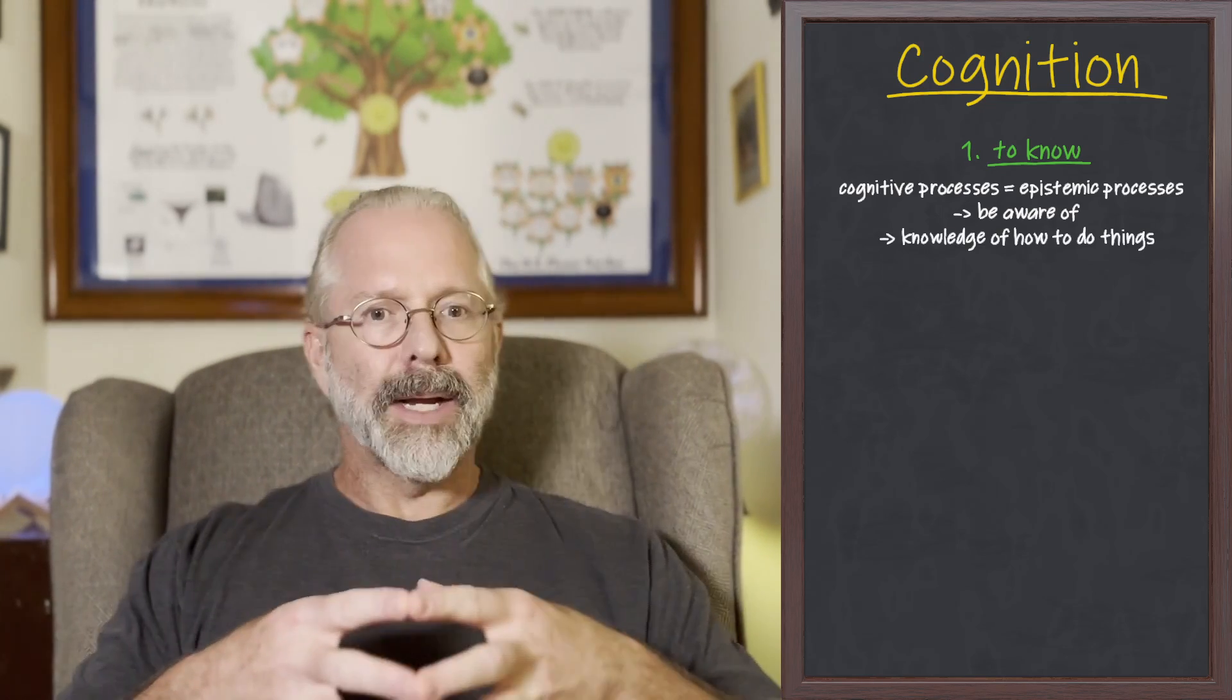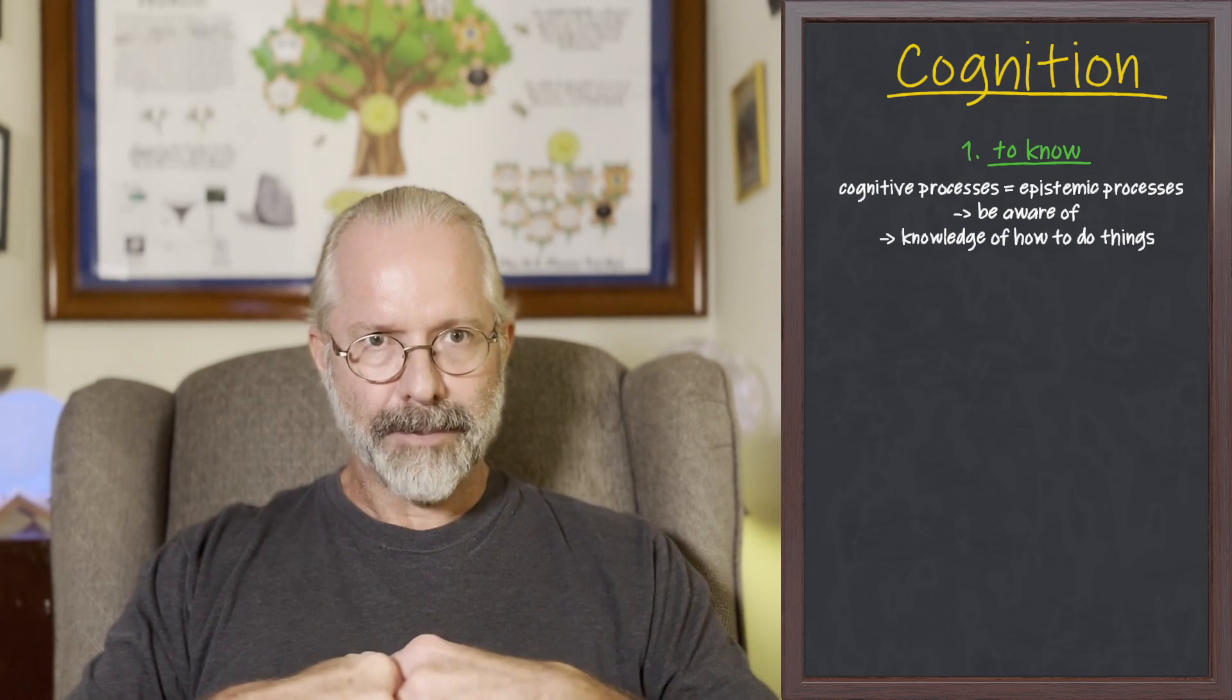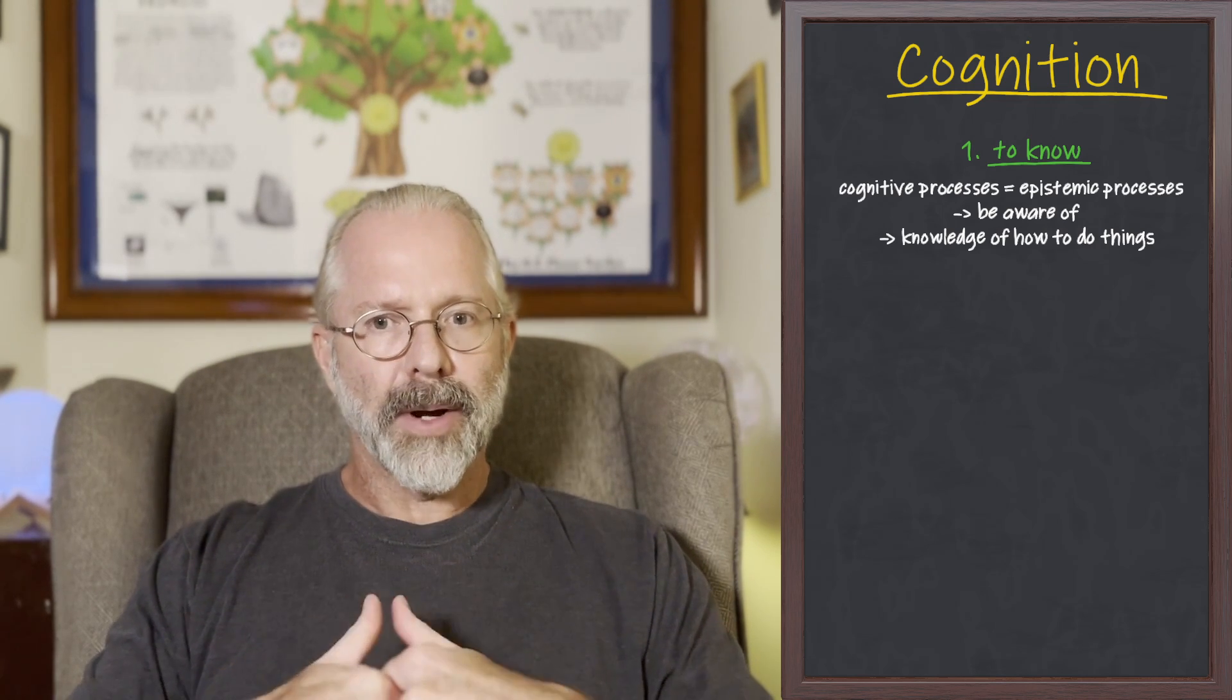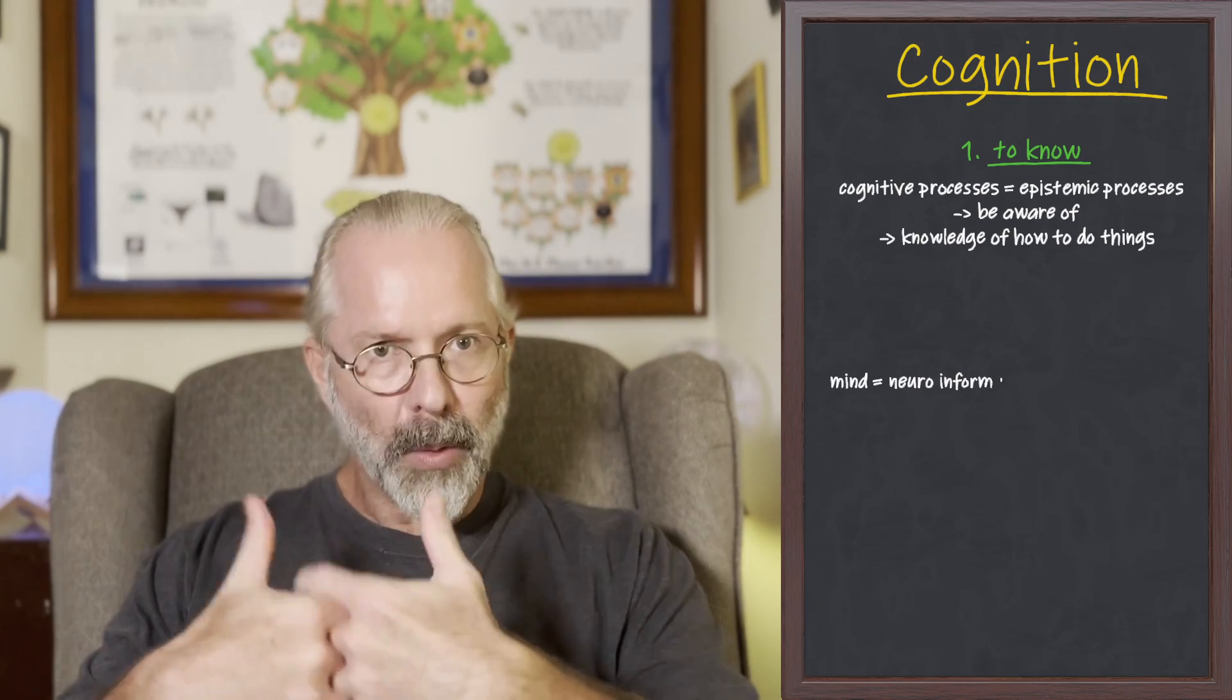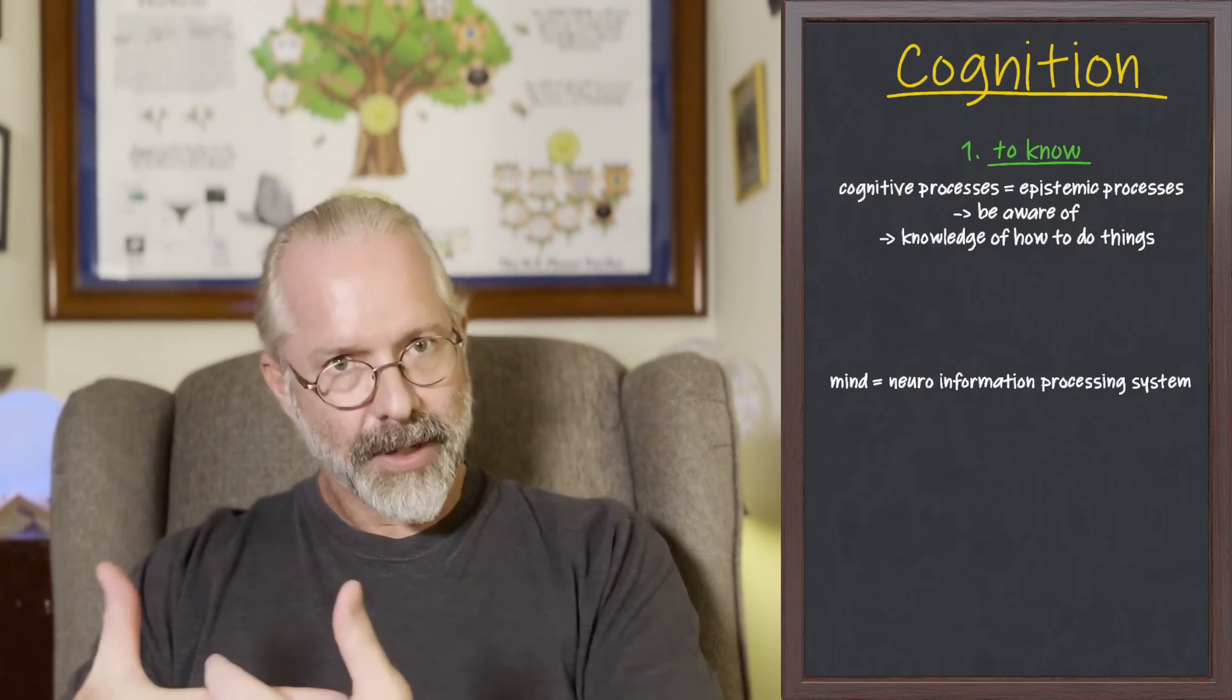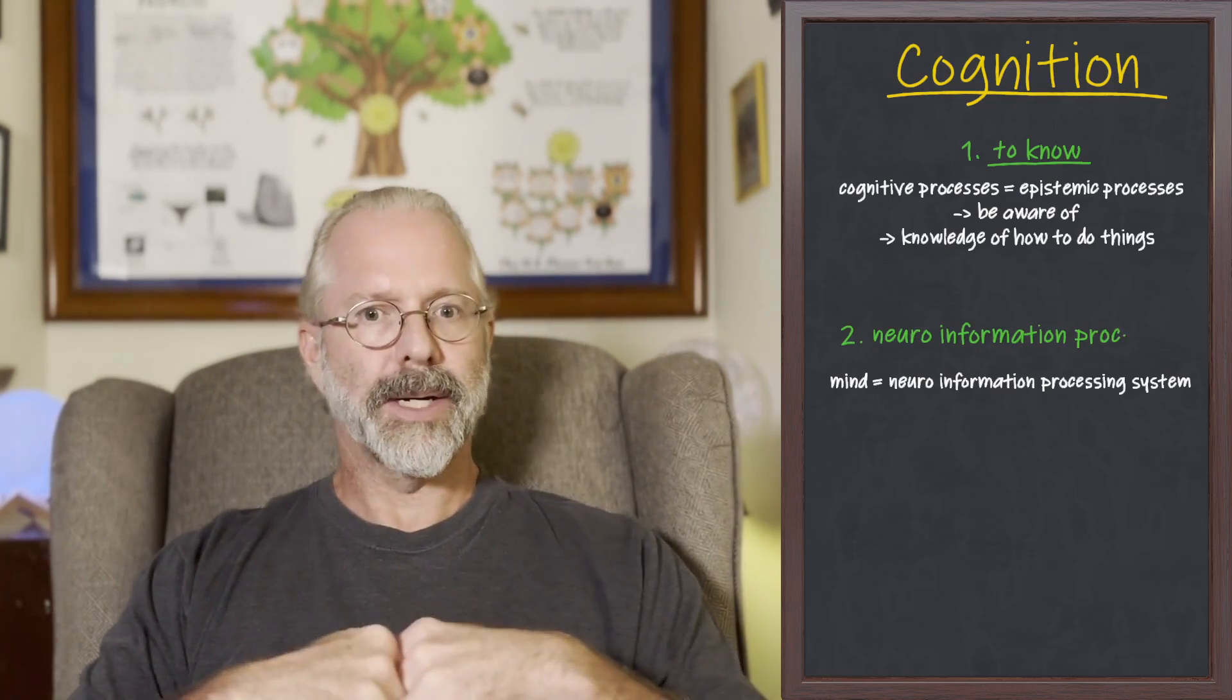The second meaning, more specific to psychology and cognitive science in general, relates to the cognitive revolution that happened in the middle of the 20th century. Indeed, if we were to summarize the essential insight of the cognitive revolution for psychology, it is that the mind is a kind of neuro-information processing system. And this brings us to the second definition, where cognition refers to information processing in general, or neuro-information processing in particular.